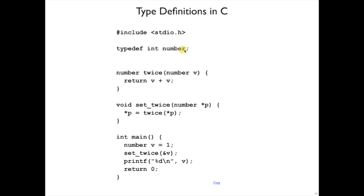If we want to have our own type name, like number, then we can use the typedef form. So here I've defined that number is a type that corresponds to int, that it's constructed by just using an integer.